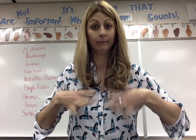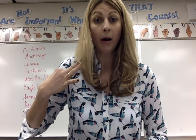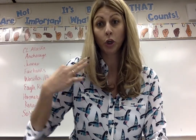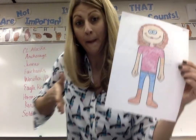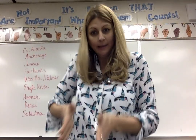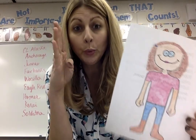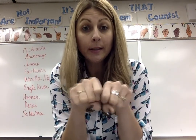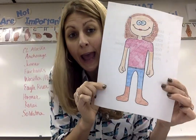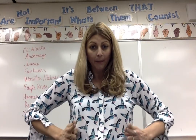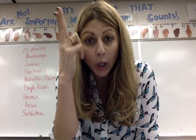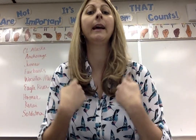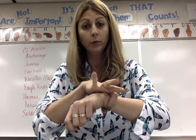And then the clothing. You always point to the object and then sign it. So shirt — pink. Pants — pants are blue. You could fingerspell jeans if you want. Shoes are brown. And then I added belt — belt is brown. And then a purple hair clip. You could also add accessories like a necklace, a watch, jewelry, or rings.